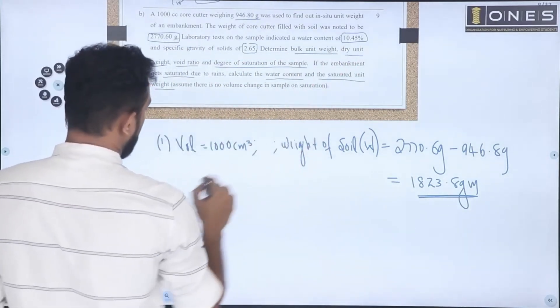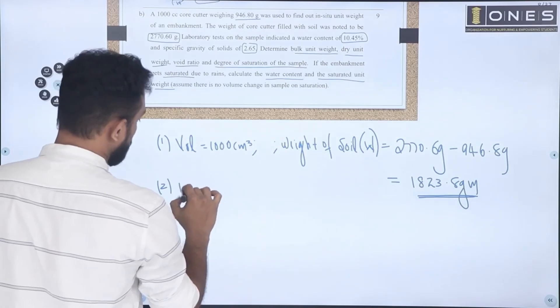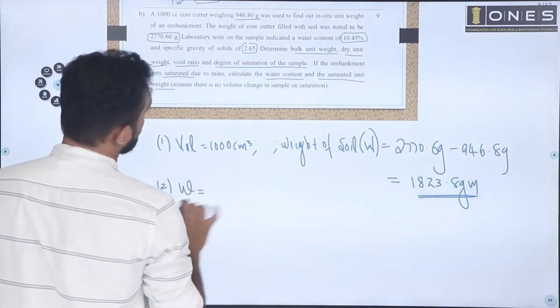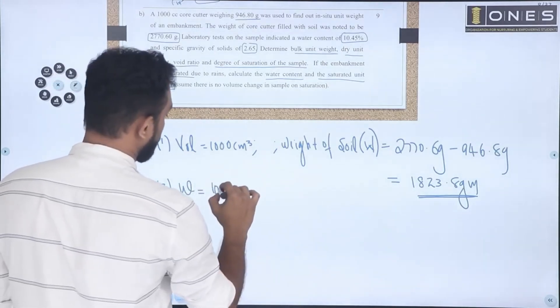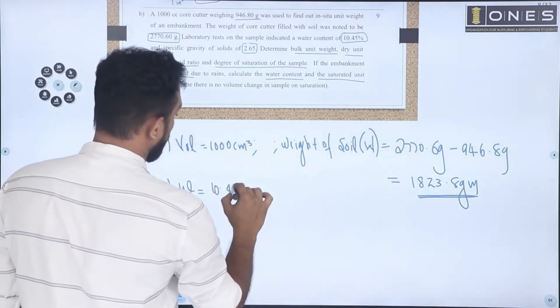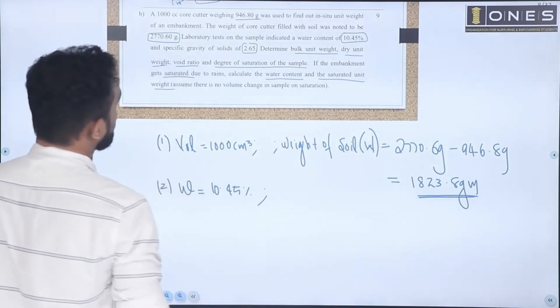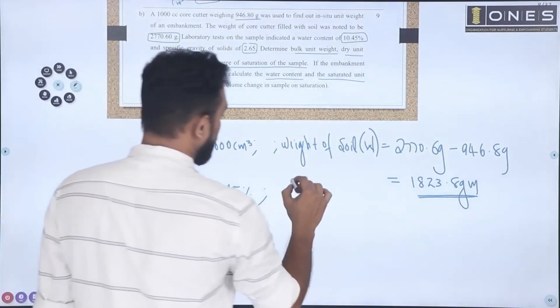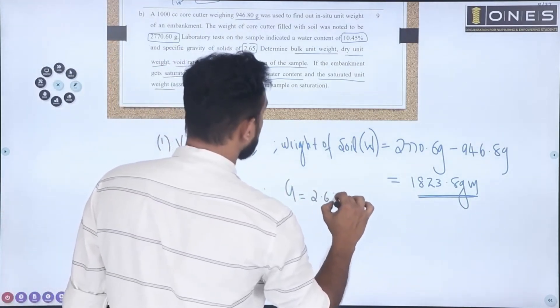From the laboratory test, water content w is 10.45% and specific gravity G is equal to 2.65.